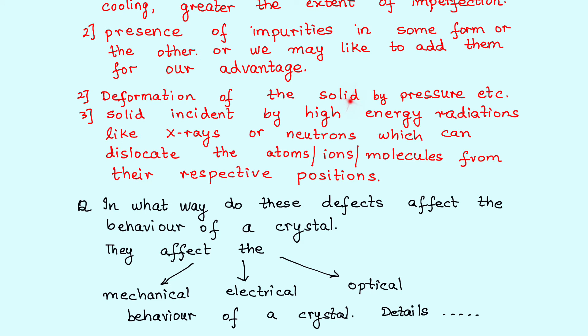We can also deform a crystal by application of pressure or high-energy radiations. What are these high-energy radiations? So when a crystal gets exposed to x-rays, neutrons, what can happen is the atoms, ions, molecules, because of their small size, they can get dislocated from their respective positions.